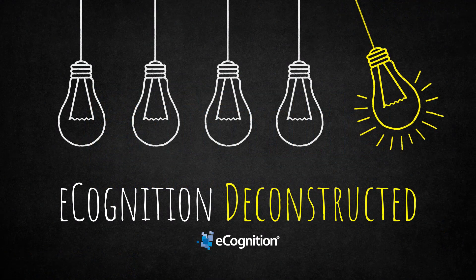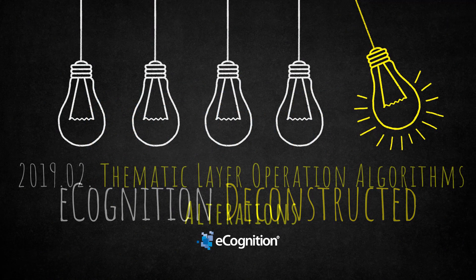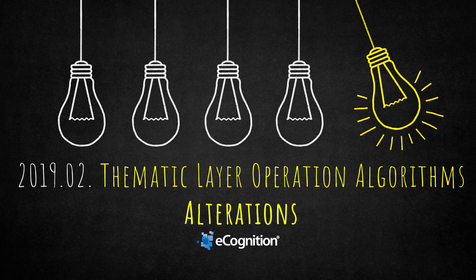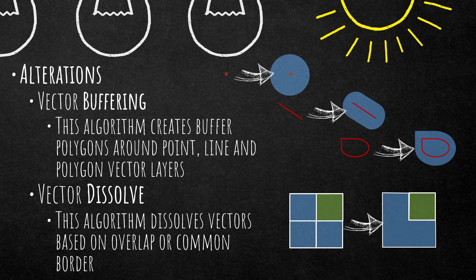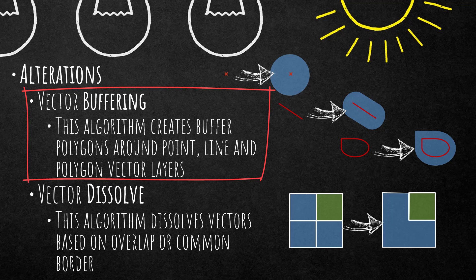Hello and welcome everyone to this eCognition Deconstructed video. Today we're going to talk about thematic layer operation algorithms, specifically alterations, which in this case means vector buffering. We're going to have a look at how you can buffer your vectors within eCognition.